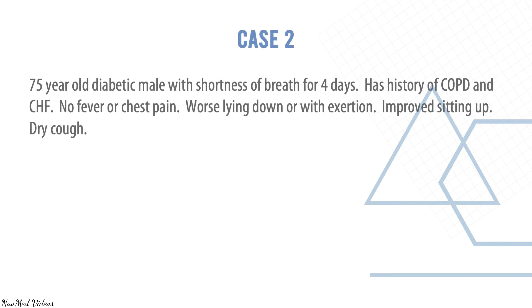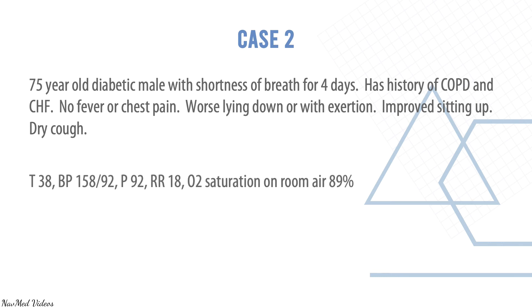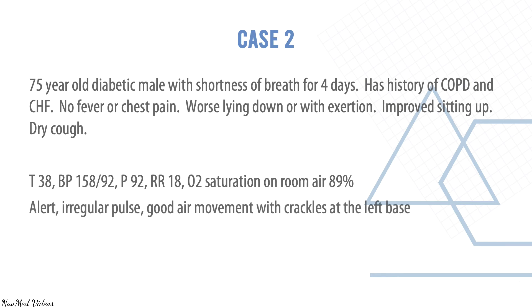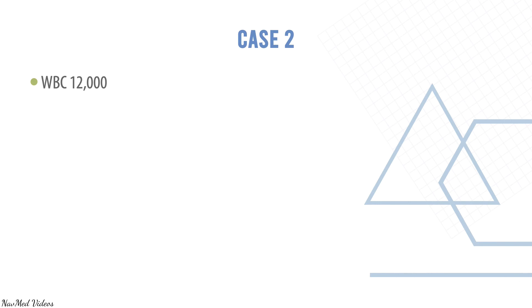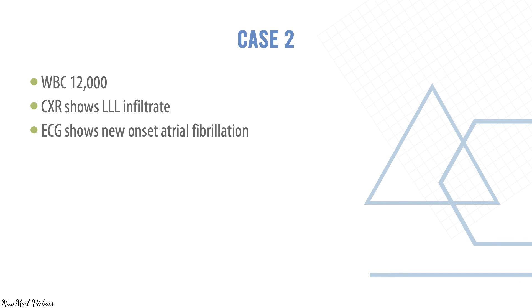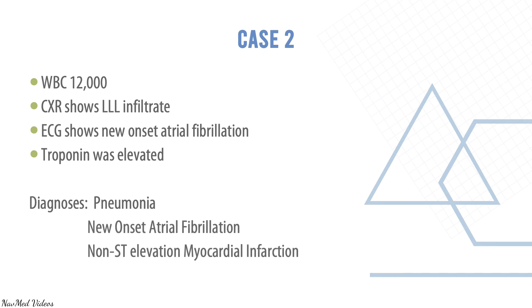Case two: the 75-year-old diabetic male with COPD and heart failure — white cell count 12,000, chest X-ray showed left lower lobe infiltrate, ECG showed new onset atrial fibrillation, and troponins were elevated. The diagnosis was pneumonia with new onset atrial fibrillation and non-ST-elevation myocardial infarction — demonstrating multiple concurrent diagnoses in an older patient.